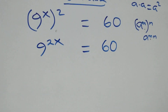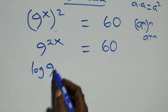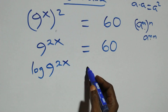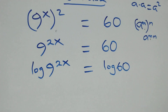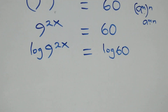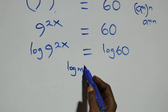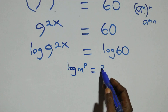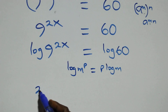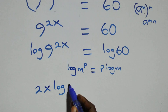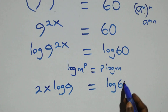The next step: we take the log on both sides, and we have log of 9 raised to power 2x equals log 60. Then we apply the power rule of logarithm, where log m raised to power p is the same thing as p times log m. So this becomes 2x log 9 equals log 60.